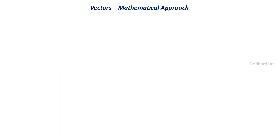Now let's understand how a mathematician sees a vector. We'll use a graphical representation with a coordinate system — an x-axis and y-axis. Vectors have magnitude and direction; this remains true across all approaches. Scalars have only magnitude, while vectors have both magnitude and direction.